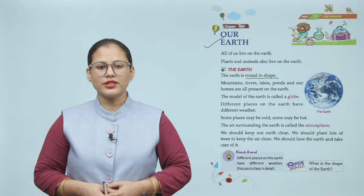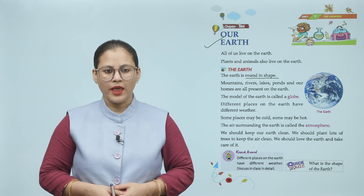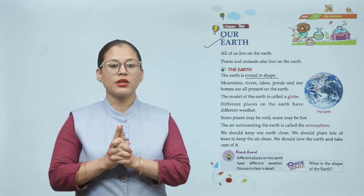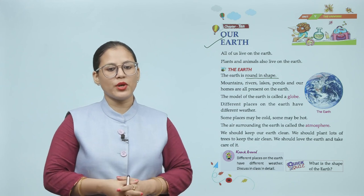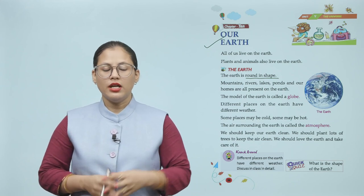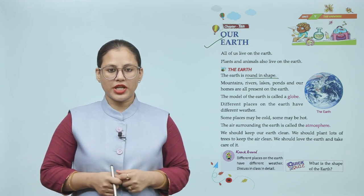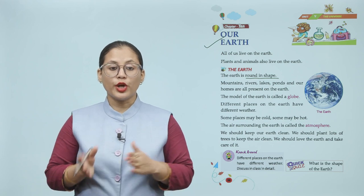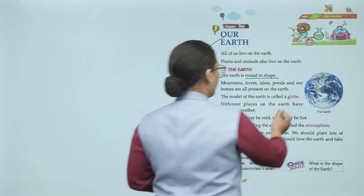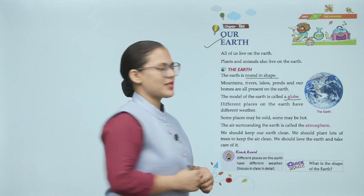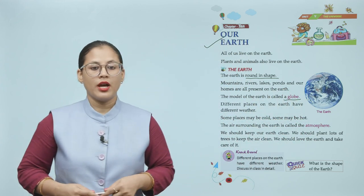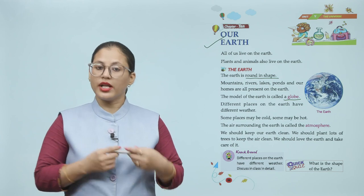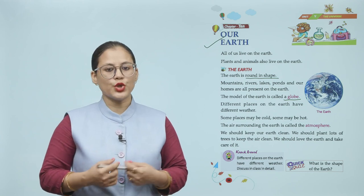The model of the earth is called a globe. Different places on the earth have different weather — some places may be cold, some may be hot. Earth ka jo shape hai, that is round. Toh jo model hota hai earth ka, usse hum kehte hain globe. And I'm sure aap logon ne dekha bhi hoga apne schools mein. Earth ke different places pe different weather hota hai — kuch thande hote hain places, kuch hot hota hai.